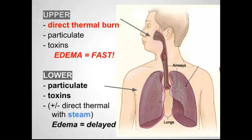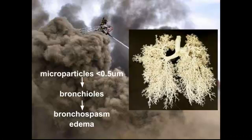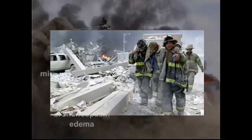The particulate injury we're talking about with the lower airway is mostly what we call microparticles. In the smoke there are tons of debris caused from incomplete combustion during the fire. Microparticles are defined as less than 0.5 micrometers — very small. They get way down into the bronchioles and cause bronchospasm and edema. You can see the really fine white dust all over everything, and just think about what's on the inside of the lungs of these patients.